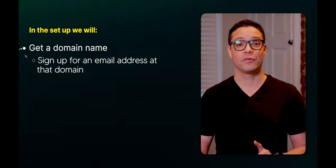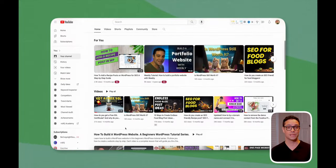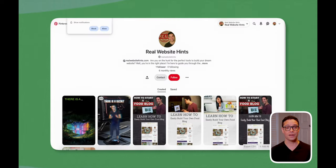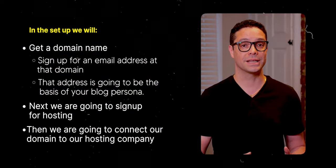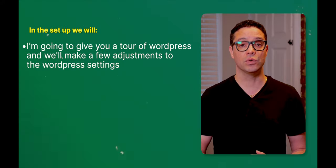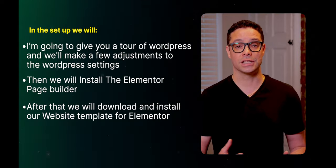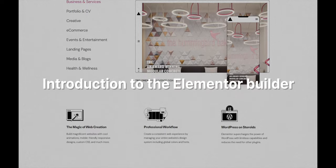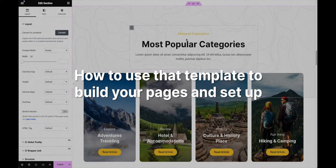In the setup we're going to get a domain name and sign up for an email address at that domain name — this address is going to be the basis for your blog persona. For example, I use tim@realwebsitehints.com to run everything related to my blog, social media accounts, and everything else. Next we'll sign up for hosting, connect our domain to our hosting company, and I'll give you a tour of WordPress. Then we'll install the Elementor page builder, download and install our website template, and start building.